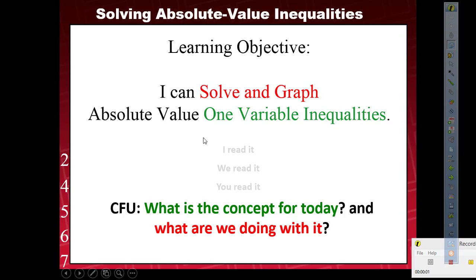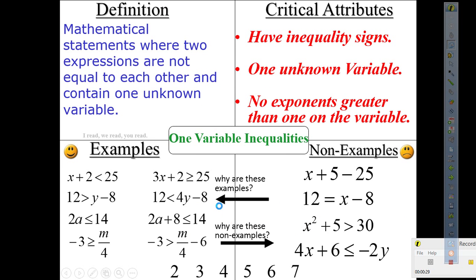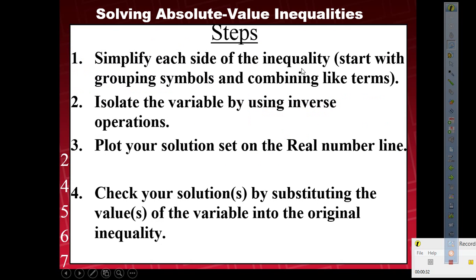Let's read together: I can solve and graph absolute value one-variable inequalities. So we're showing one-variable inequalities. We don't need a Freya model for that. But today we're going to focus on absolute value. We don't need steps because we know we're still using simplify, isolate, plot, and check.